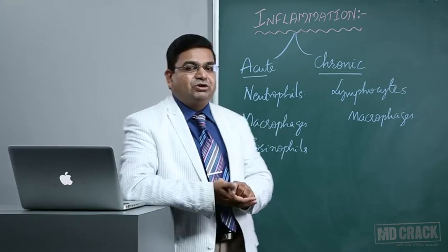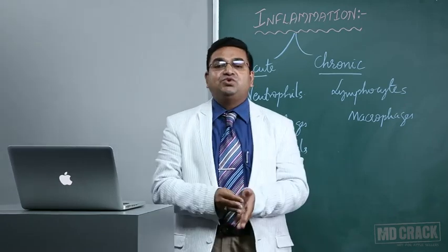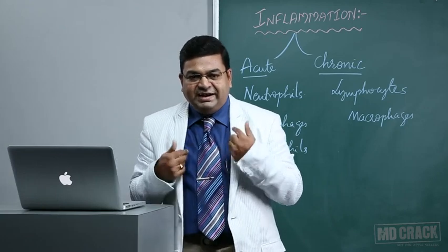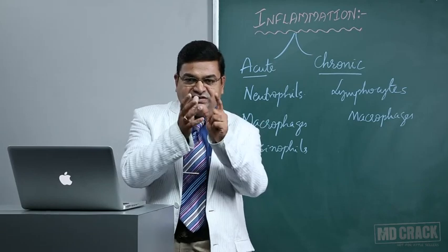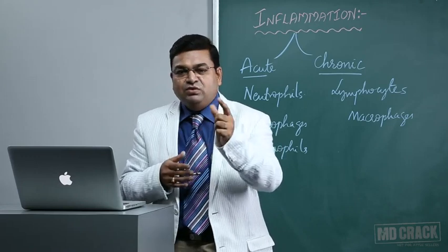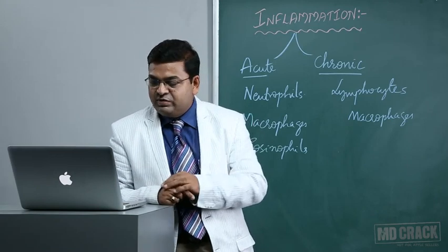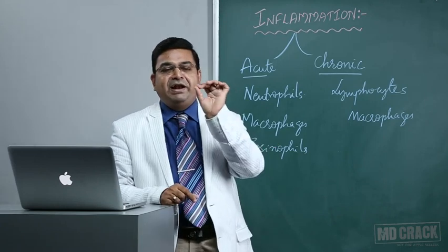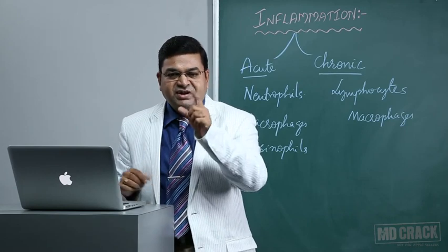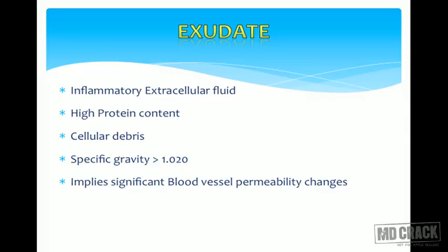By seeing the color itself, it is sometimes possible to differentiate acute and chronic inflammatory exudates when body cavities become inflamed and exudative fluid accumulates. You can determine whether it is a transudate or exudate by color. Exudate is predominantly an acute inflammatory fluid containing neutrophils with plenty of neutrophilic debris and high protein content. It implies significant blood vessel permeability changes, and its specific gravity is more than 1.020. Exudate refers mostly to the acute inflammatory process.